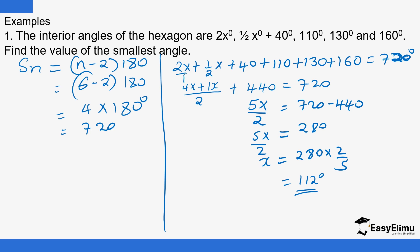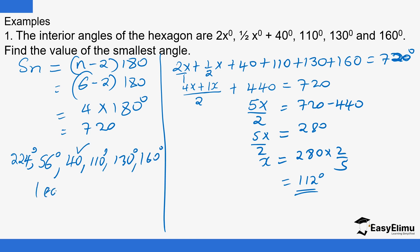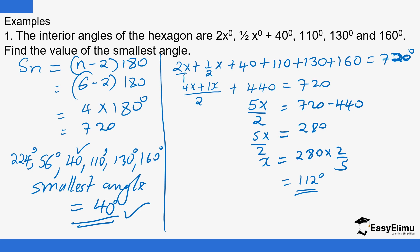So we can list all the angles. The first angle is 2x = 2 × 112 = 224°. The second is ½x = 56°. The third is 40°. Then 110°, 130°, and 160°. So which one is the least? The smallest angle is 40°.